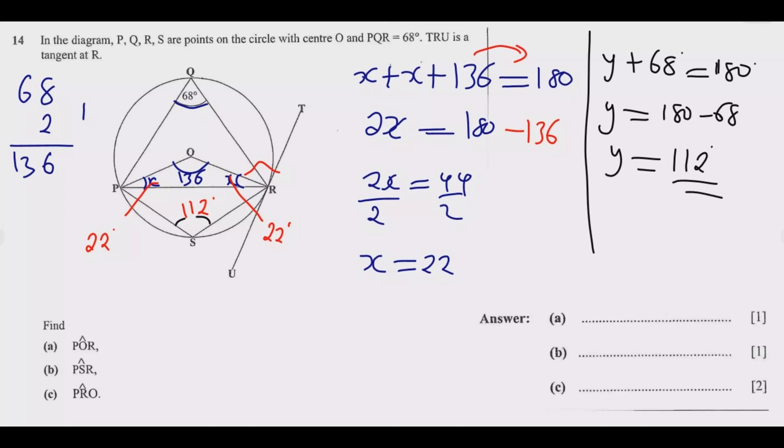Find angle POR. Angle POR—we found this angle to be 136, so this is 136 degrees, already found. Then angle PSR—which angle is that? PSR, we found this angle to be 112 degrees. What's the last angle? Angle PRO—this angle. This angle we found to be 22.